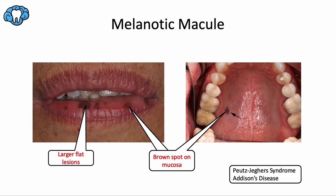Level two is the melanotic macule — a localized, pigmented lesion associated with increased melanin production. Similar to an ephelis, melanotic macules are asymptomatic, flat, circular, not thickened, and completely benign. The key difference is that melanotic macules affect the stratified squamous epithelium of oral mucosa only — this is purely a mucosal lesion. The version affecting skin is called lentigo. The labial mucosa is the most common location for an oral melanotic macule, followed by the gingiva, palate, and buccal mucosa.